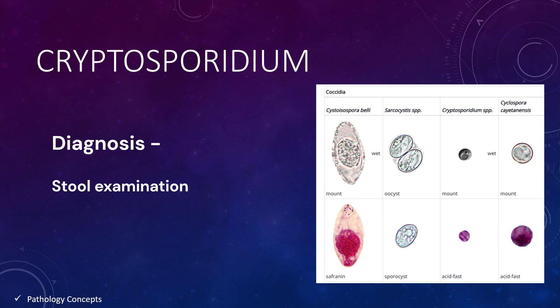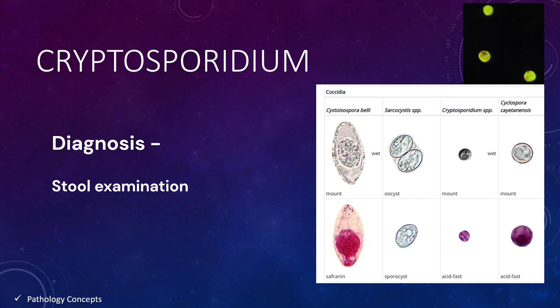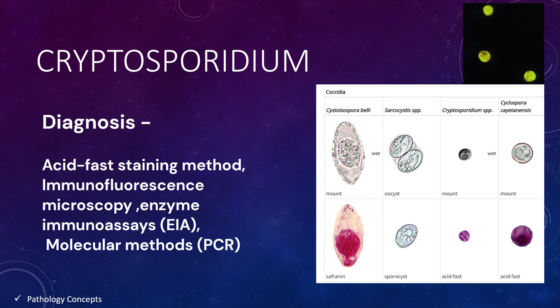Diagnosis is mainly done by stool examination. Cryptosporidium species oocysts are rounded and measure around 4 to 5 microns in diameter. Sporozoites are sometimes visible inside the oocyst. Oocysts can be stained with trichrome, modified acid-fast stain, or fluorescent stains oramine and rhodamine. Other modalities of diagnosis include acid-fast staining, immunofluorescence microscopy, enzyme immunoassays, and molecular methods like PCR.